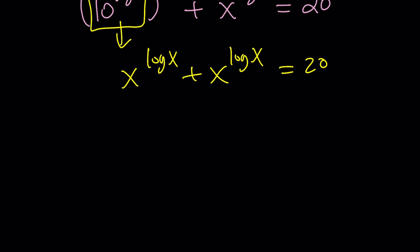Since you have the same thing twice, that's going to give you 2 times x to the power log x equals 20, so x to the power log x equals half of 20, which is 10. Now, at this point, again, you have a couple different options.